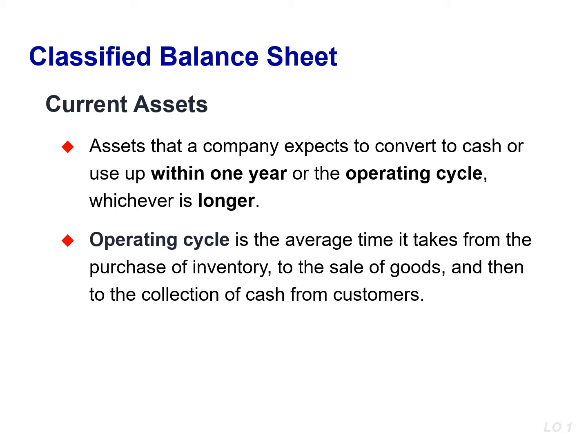Some companies use a period longer than one year to classify assets and liabilities as current because they have an operating cycle longer than one year. The operating cycle of a company is the average time required to go from cash to cash in producing revenue. Companies must purchase inventory, then sell it on account, and then collect cash from customers. For most businesses, this cycle takes less than one year, so they use a one-year cutoff. For some businesses, such as an airplane manufacturer, this period may be longer than a year. We will assume that companies use one year to determine whether an asset or liability is current or long-term.